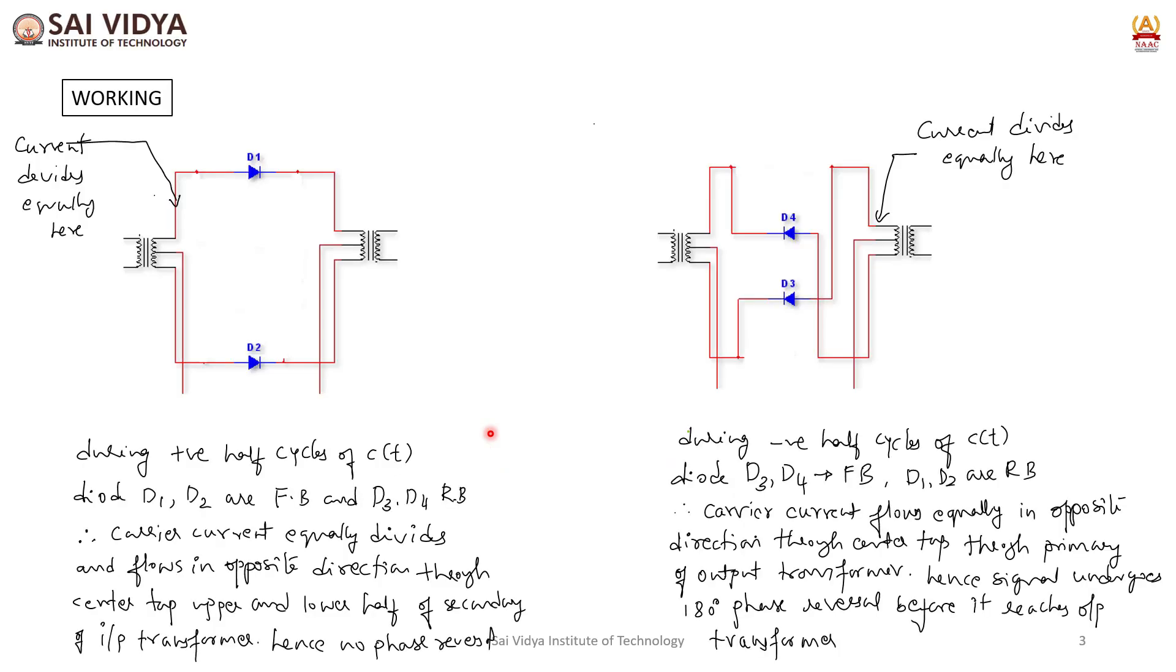Working of the circuit is as shown. During positive half cycle of the carrier, diode D1 and D2 are forward biased. The current equally divides and flows in opposite direction through the center tap, upper and lower half of secondary of input transformer. Hence, there is no phase reversal at the output.